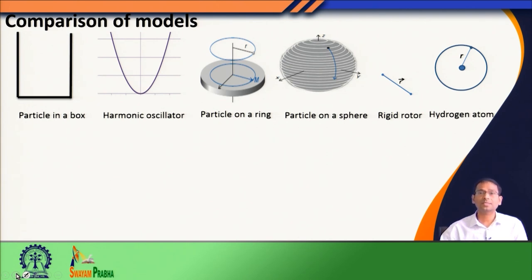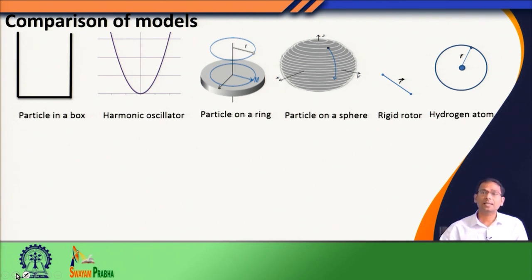The next problem we dealt with was the harmonic oscillator. While particle in a box showed the translational motion of a particle, the harmonic oscillator allowed us to discuss the vibrational motion of a molecule. We can use the harmonic oscillator model for any system that responds to an external field, gets disturbed from its equilibrium position, and oscillates back and forth. For molecular systems, molecular vibration is an important field where harmonic oscillator solutions are heavily used.